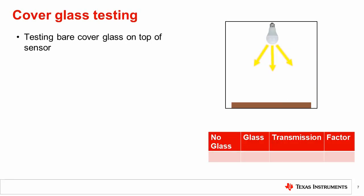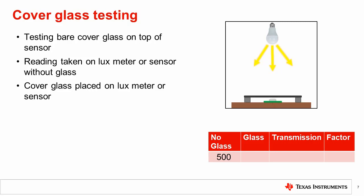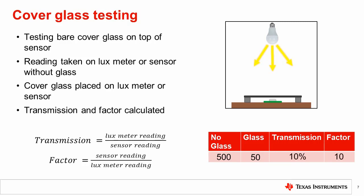If different cover glass samples are to be tested or the cover glass has just been received and has not yet been integrated in the system, the transmission and factor can be measured in the following way. The same setup described in the previous video is utilized, consisting of a stable light source inside an enclosure. A light source or lux meter is placed in the setup to get a baseline reading as shown. The cover glass is now placed on top of the sensor and another reading is taken. Care should be taken to ensure light is blocked from entering from the sides and corrupting the measurement. Using this method, the transmission and factor can be calculated as shown.